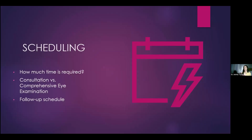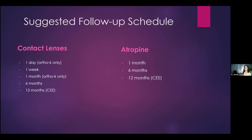Scheduling is the bloodline of your office — if you don't schedule these things right, you are going to be so stressed out. Do you want a separate consultation or a comprehensive eye exam that also has a consultation? What does the follow-up schedule look like? With contact lenses: one day for orthokeratology, then one week for everything, one month for ortho-K, then six months, then twelve months. Atropine is typically one month, six months, and then twelve months. What does an actual eye exam for myopia management look like? You want to make sure you cycle, perform a cycloplegic refraction, take a look at their accommodative and binocular status, pupils, dilate them, and definitely consider topography and axial length if you have those pieces of equipment available.